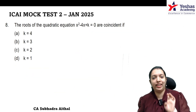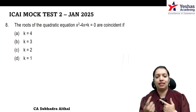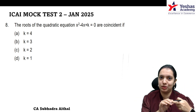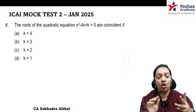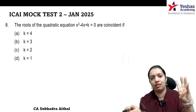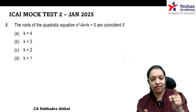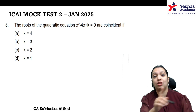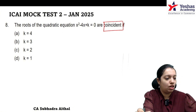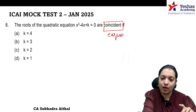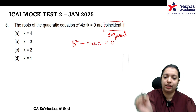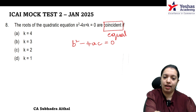Next, question number 8. I picked this for one reason: in class we learned the nature of roots. It can be of three types — b² - 4ac = 0 means equal roots; less than 0 means imaginary roots; greater than 0 means real and rational roots. This time they asked about coincident roots. Coincident means the roots are equal, so b² - 4ac = 0.